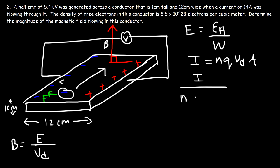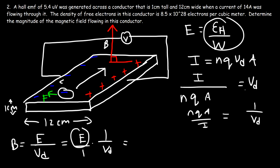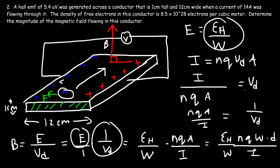Substituting into B = E × (1/v_d): replace E with (Hall EMF / W) and replace 1/v_d with (NqA / I). Since the area A = W × D, the width W cancels, leaving a general formula: B = (Hall EMF × N × q × D) / I. This shows how the Hall effect can measure the magnetic field passing through a conductor.